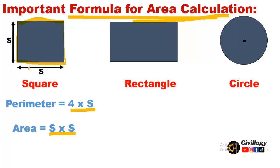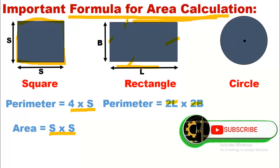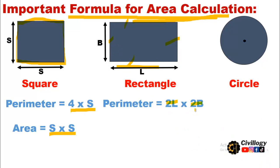The second figure is rectangle. This is the length L of the rectangle and this is B, the breadth of the rectangle. The perimeter of the rectangle is calculated as two times length plus two times B, since in a rectangle two sides are of the same length. The area is equal to breadth multiplied by length.